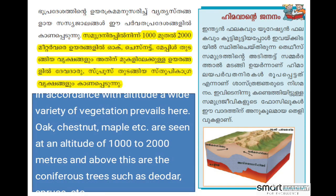In accordance with the altitude, a wide variety of vegetation prevails here. Oak, chestnut, maple etc. are seen at an altitude of one thousand to two thousand meters. Above this altitude are the coniferous trees such as deodar and spruce.